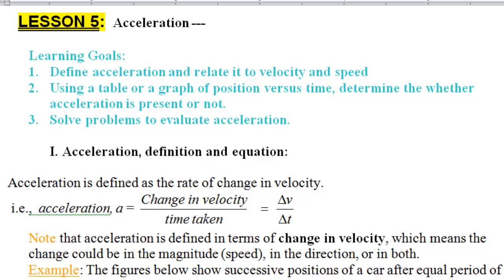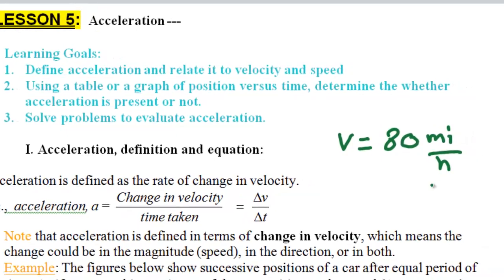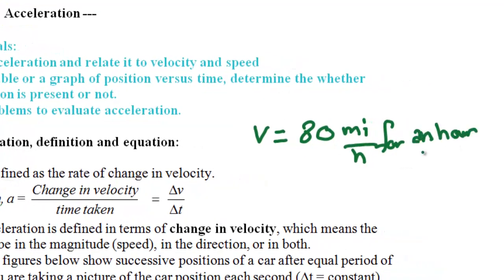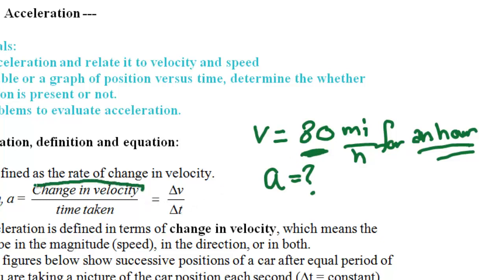In order to have acceleration, you have to have a change in velocity. For example, if we have a car moving at 80 miles per hour on the highway for a whole hour, what's the acceleration of this car? Notice here — the magnitude of the speed or velocity is not important. What's important is whether there is a change in velocity, because that determines whether there is acceleration.